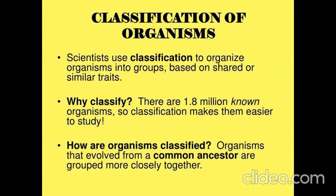We use classification to organize organisms into groups based on shared or similar traits. But why? Because there are 1.8 million known organisms among billions and billions of unknown organisms, so classification makes it easier to study all of them. Organisms that evolved from a common ancestor are grouped more closely together.